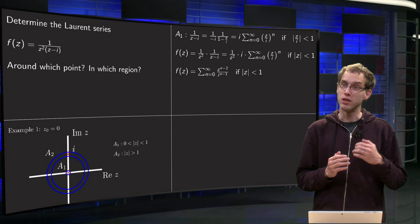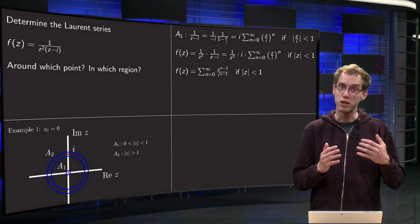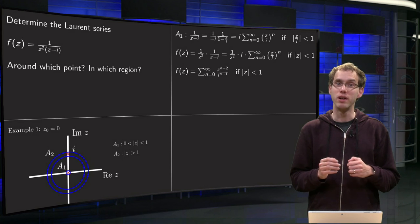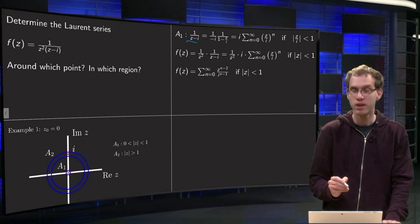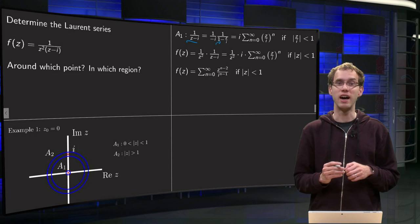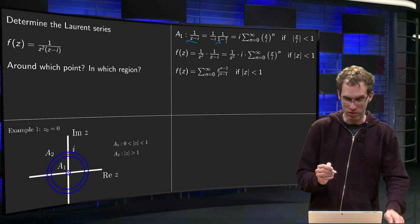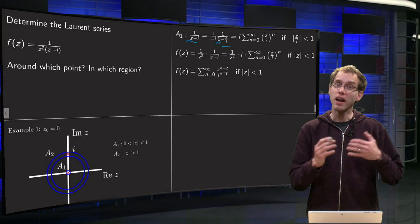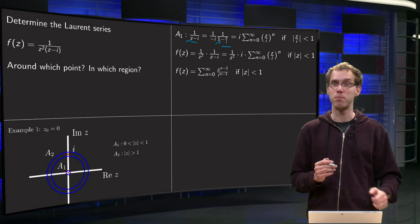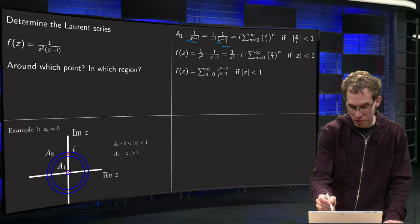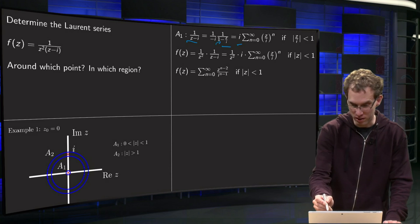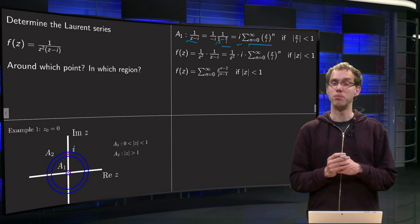In A1 we know that |z| < 1, so we expand 1/(z - i) in powers of z. We rewrite 1/(z - i) as a geometric series — we need a 1 in the numerator, so we take out a factor of -i to get 1/(−i · (1 − z/i)). Then we use the geometric series 1/(1 − x) = Σ xⁿ. The factor 1/(-i) becomes i, and our ratio equals z/i, so we get the geometric series of (z/i)ⁿ.